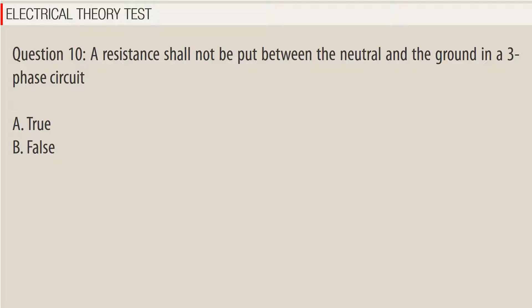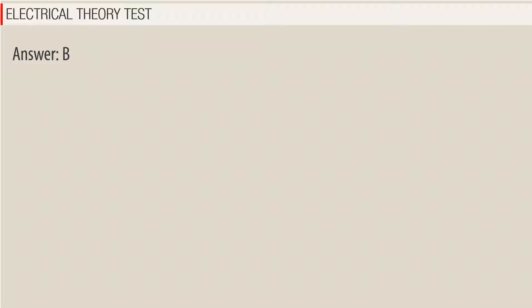Question 10: A resistance shall not be put between the neutral and the ground in a three-phase circuit. A. True, B. False. Answer: B.